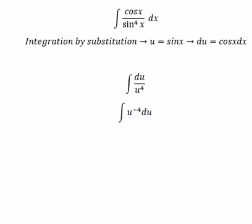Now we can get the final answer: u to the power of negative 4 plus 1, over negative 4 plus 1, plus C as the constant.